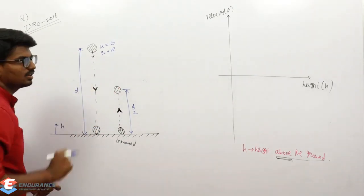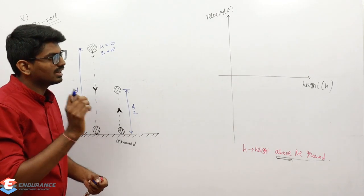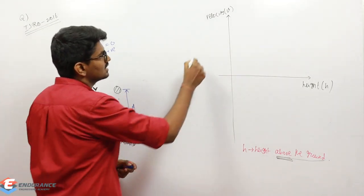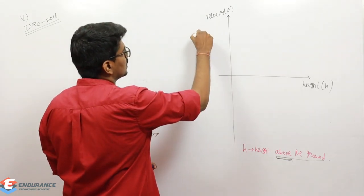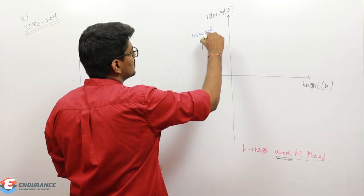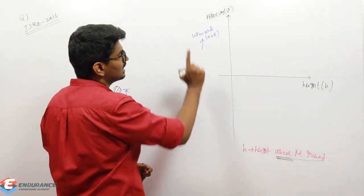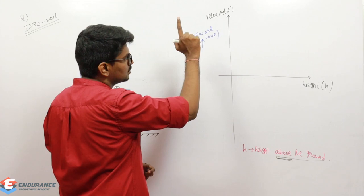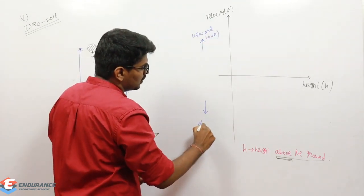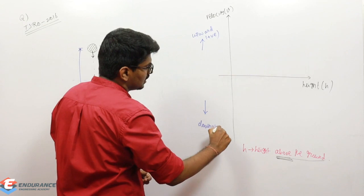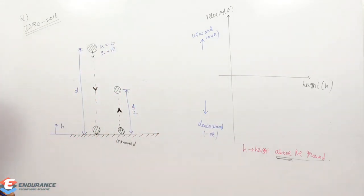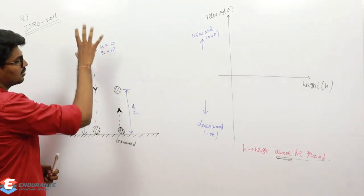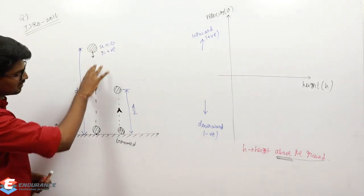Since we are going to plot velocity, let us define a sign convention: if the body moves upward, velocity is positive; when it is moving downward, velocity is negative. Now, I dropped the ball from a distance d and it travels that distance d and hits the ground.